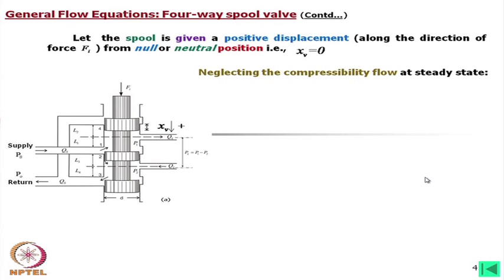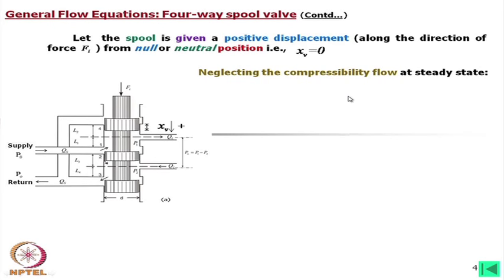Neglecting compressibility flow at steady state: compressibility flow occurs when oil within a trapped volume is pressurized, causing fluid motion. This can be neglected for general-purpose calculations, though it is sometimes considered for more accurate transient analysis. For the main analysis presented here, we have neglected this compressibility flow.